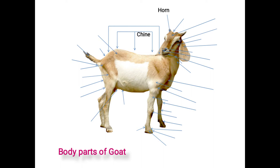First, horns. They are in pairs and situated on the head. The functions of horns are self-defense, age estimation, graceful appearance, and breed characteristics. Second is the head crust, which is a line joining the roots of the horns. The raised portion of the crust is called the pole or nimboru, and it is prominent in exotic breeds as compared to indigenous breeds.